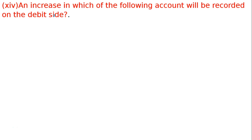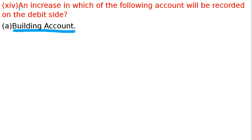14th question: An increase in which of the following accounts will be recorded on the debit side? Jo niche options diye hain, from those, building account is correct — because building ek asset hota hai. An increase in building account will be recorded on the debit side. Asset badha to debit side mein likhte hain. Building, land, books, computer, office equipment, machines — sab assets hain. Asset badhta hai to debit mein likhte hain, credit mein likhte hain jab ghata ho.